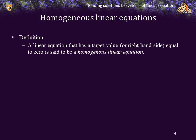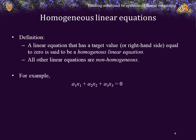Definition. A linear equation that has a target value or right-hand side equal to 0 is said to be a homogeneous linear equation. All other linear equations are said to be non-homogeneous. For example, here we see a homogeneous linear equation — the right-hand side is equal to 0. If the right-hand side is changed to anything else, say 1, it is no longer a homogeneous linear equation; it is a non-homogeneous linear equation.